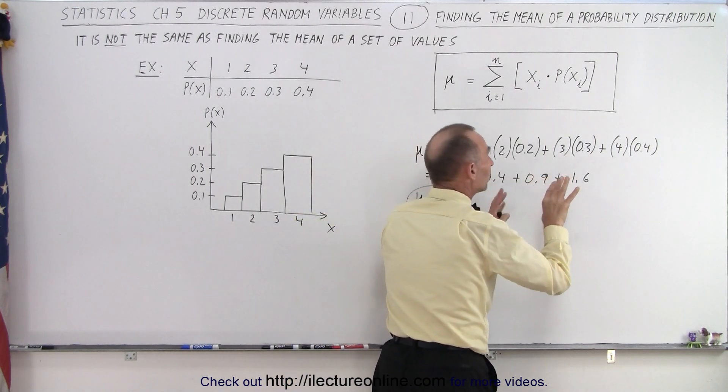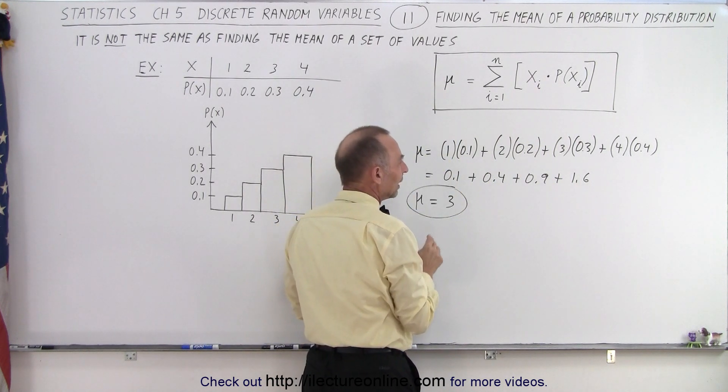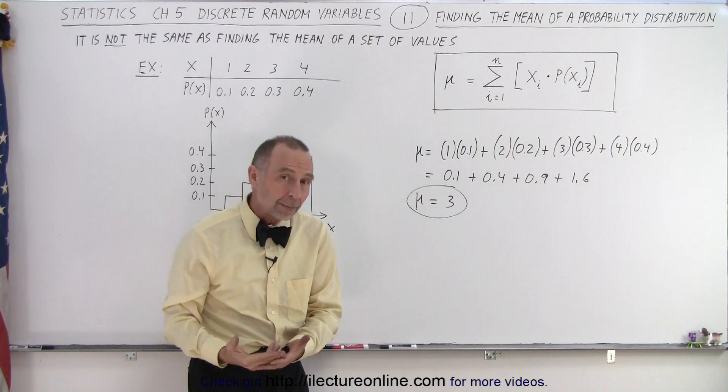the number we're trying to find which is the mean of the probability distribution right here, that that number will be skewed to the value for x where there's a higher probability.